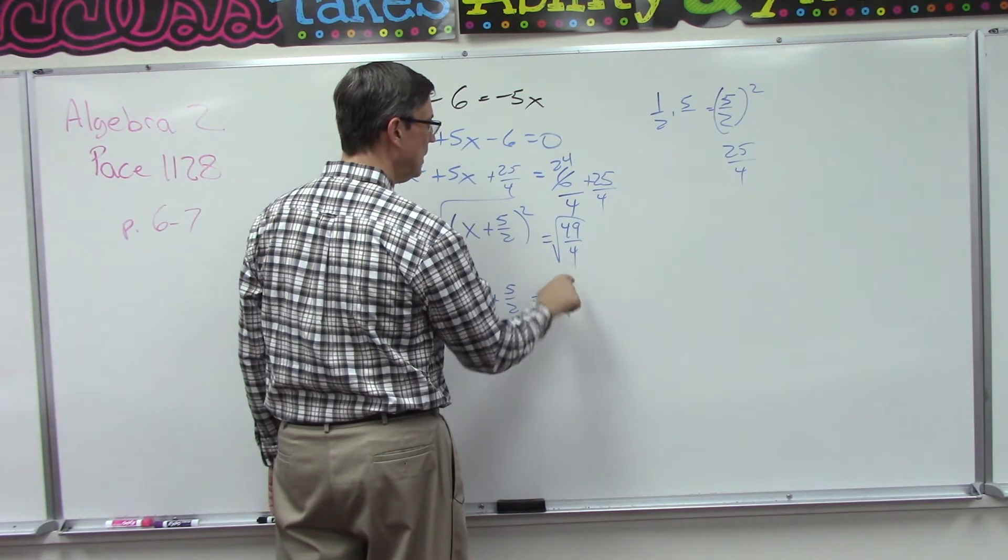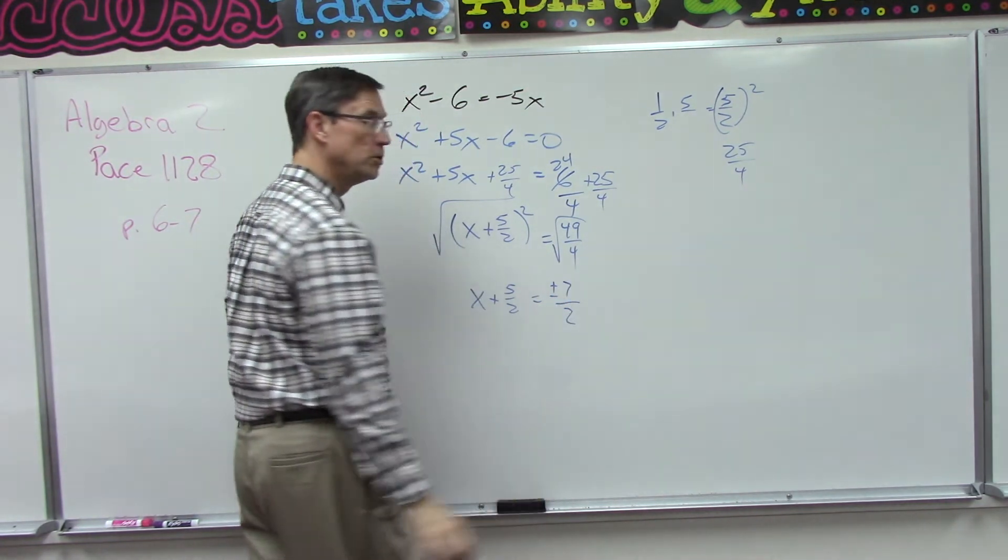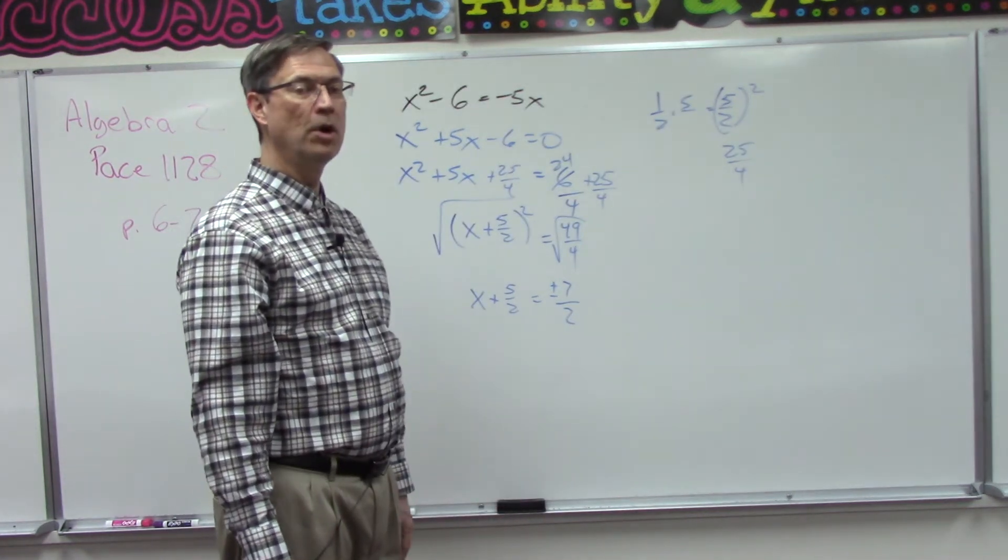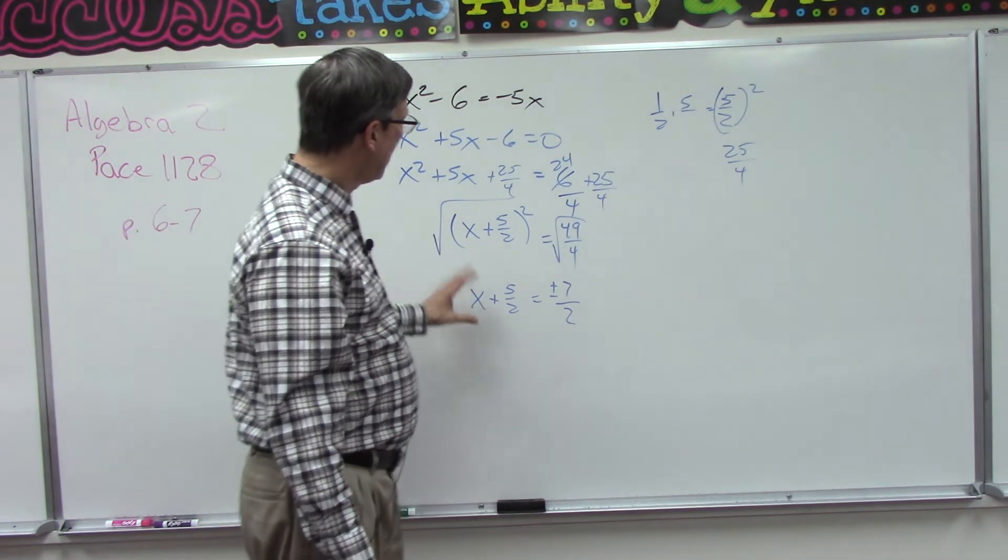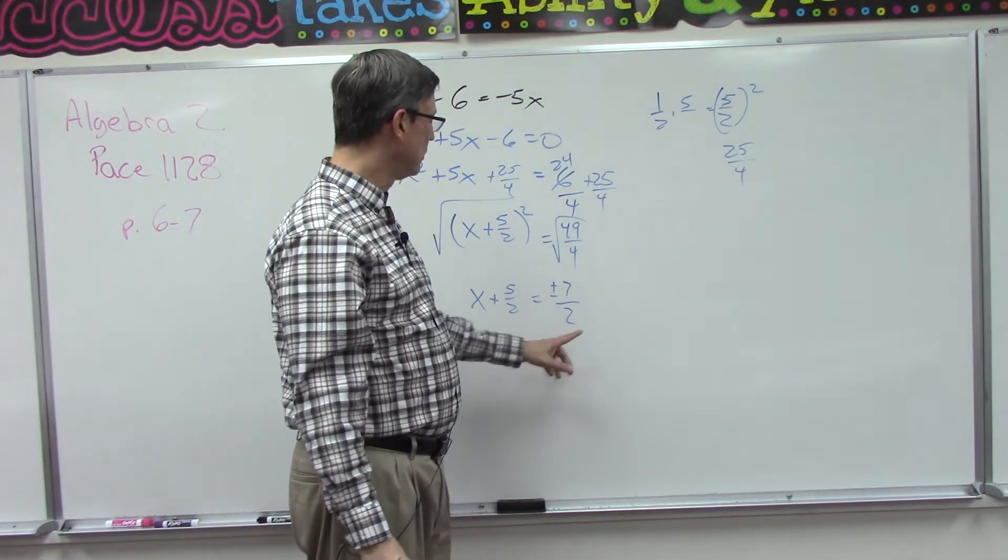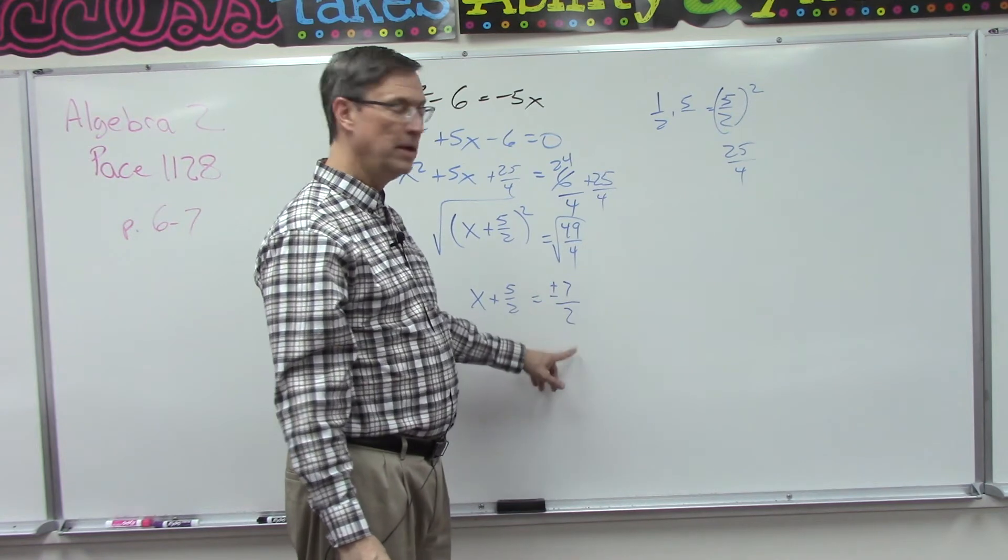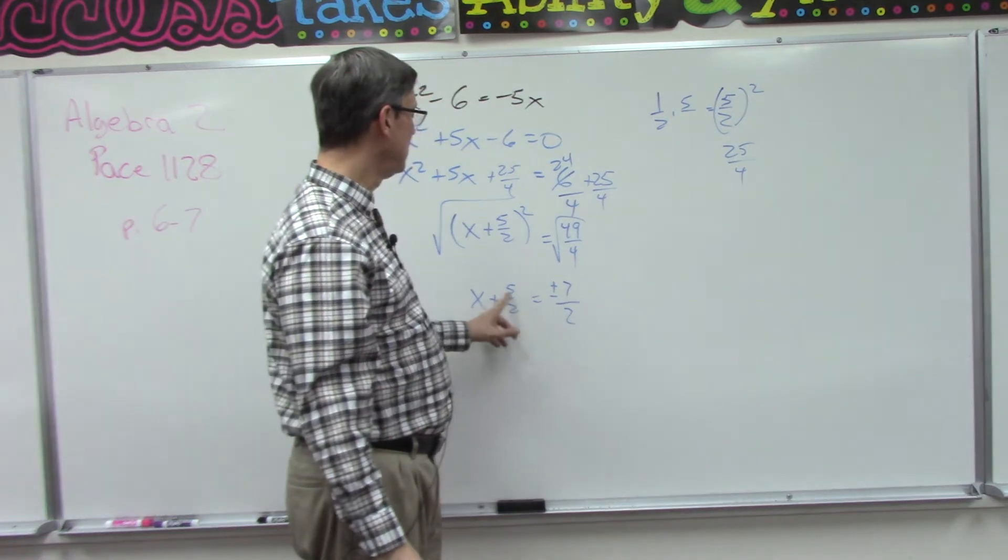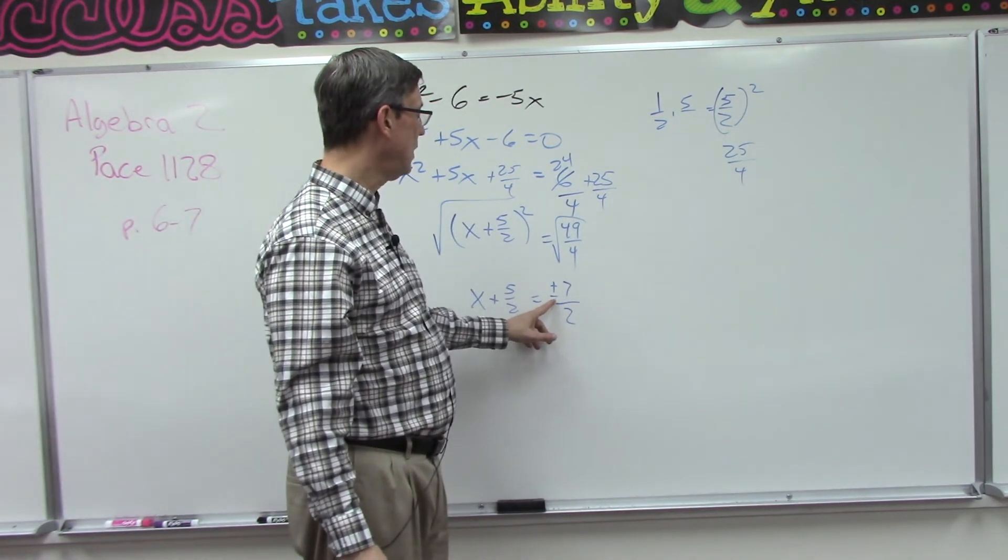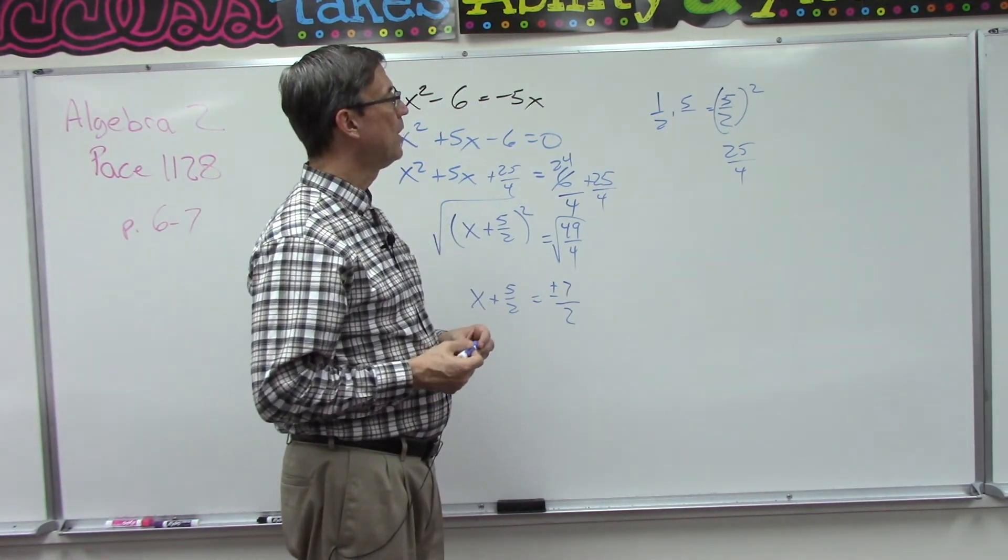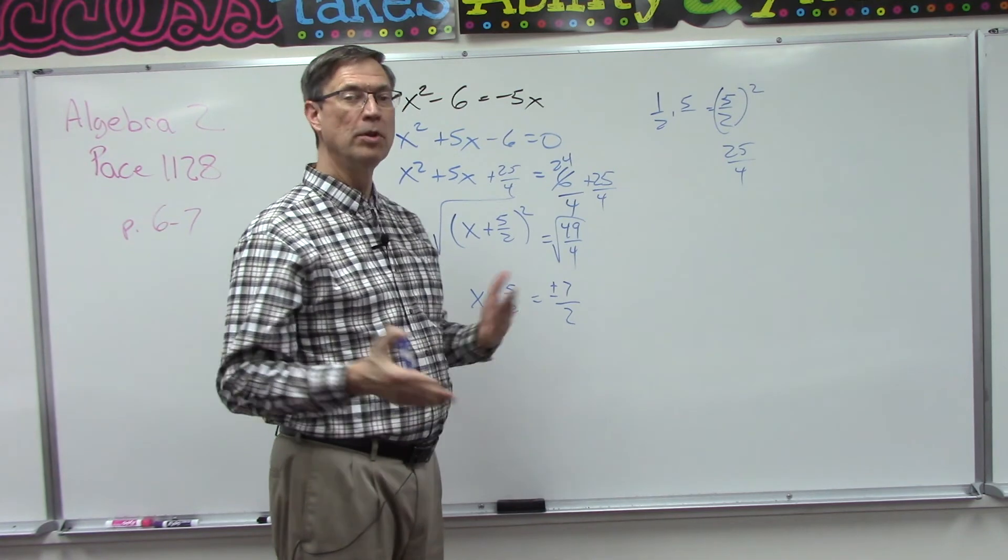Almost done. I'm going to let you finish this one. We did the hard part together. Okay, the last step is you bring the 5 halves over, so you have negative 5 halves. And then first you'll add 7 halves, and then you'll do the negative 5 halves and subtract 7 halves. So you're going to get two answers for that problem.